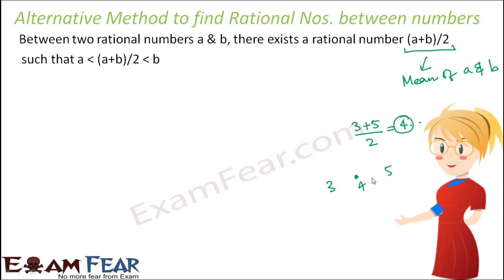For any two rational numbers, if we calculate their mean, we get a number that lies exactly midway between them. As you can see, A is less than (A plus B)/2 which is less than B. So by calculating the mean, we can find rational numbers between two rational numbers.